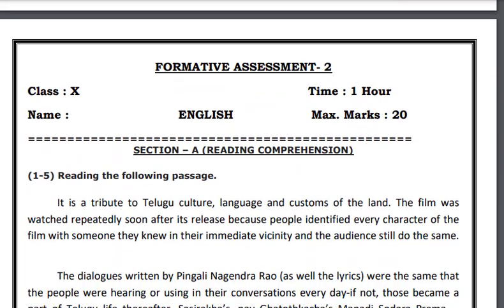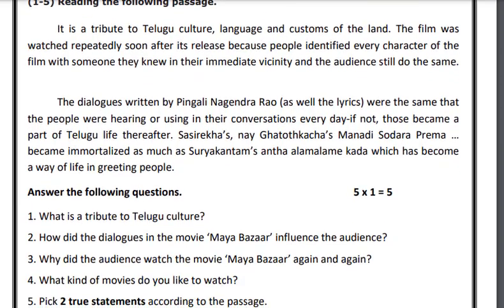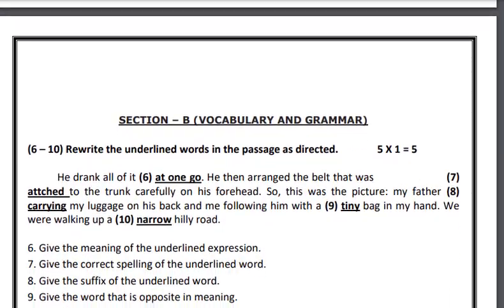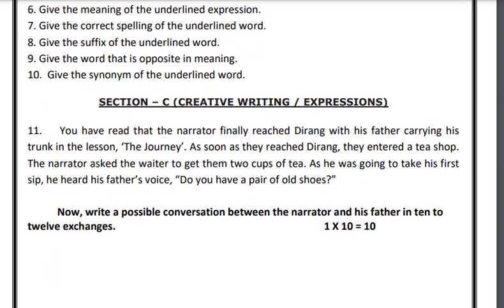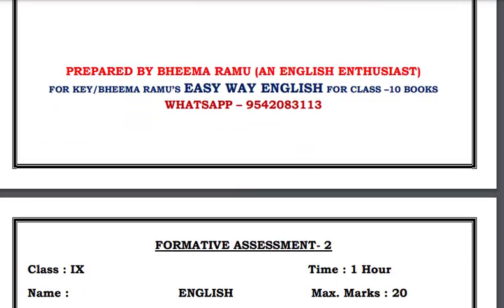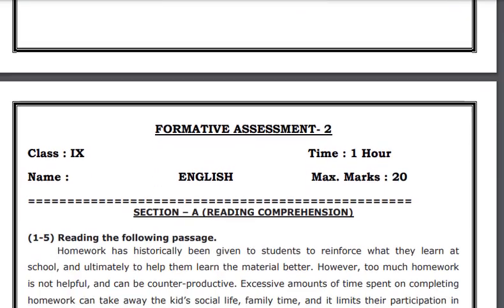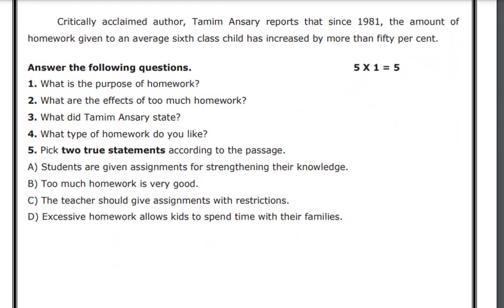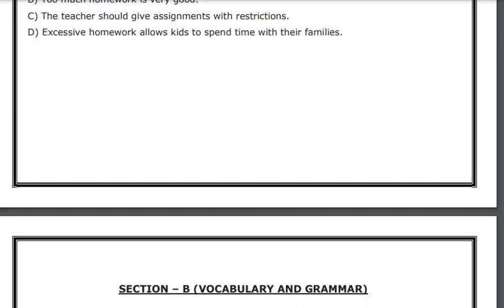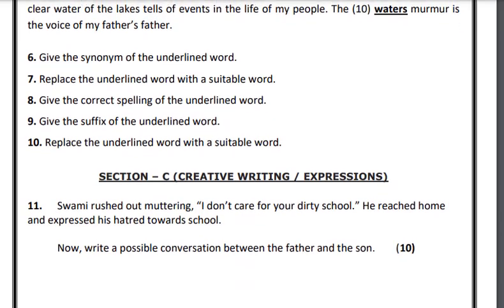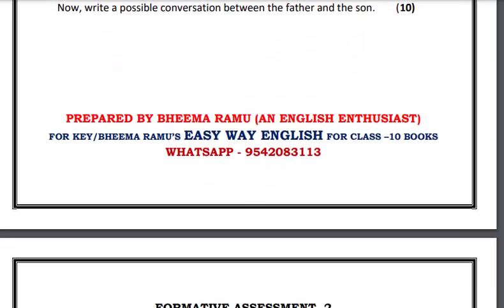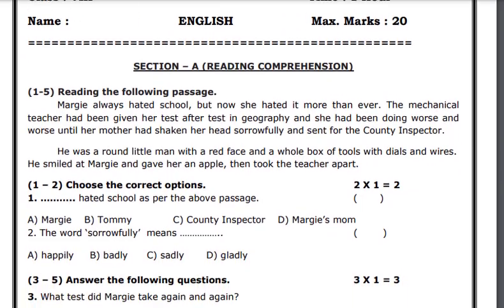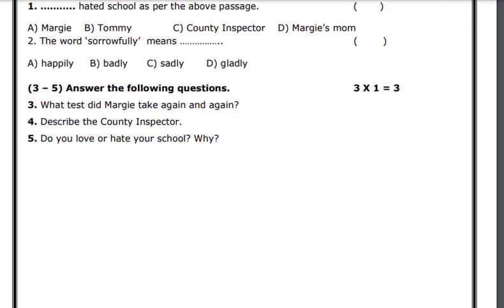Here is the FA2 English question paper for class 10, moving on to Section B and Section C. Then class 9: Section A reading comprehension, Section B vocabulary and grammar, Section C creative writing.